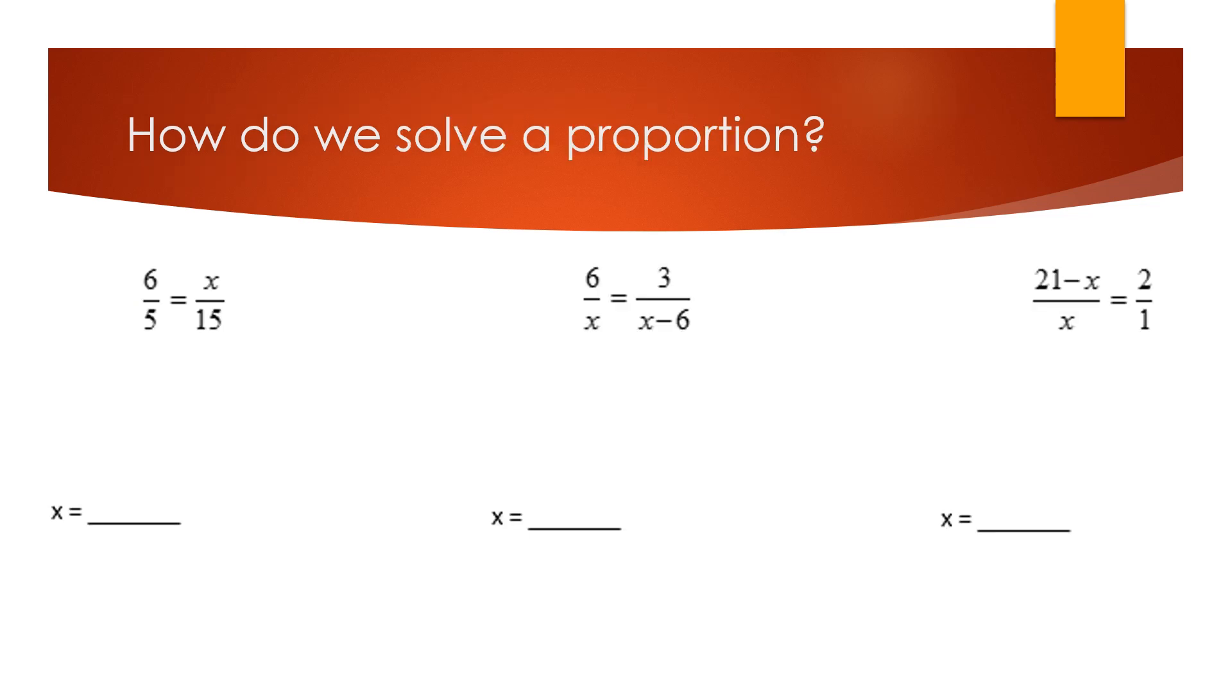So how do we solve a proportion? This is cross multiplication. This is what we've been practicing. So for something like this, it's going to be 6 times 15 equals 5x, and you get x equals 18 when you work through your algebra. We're expecting that you're very familiar with this by now.